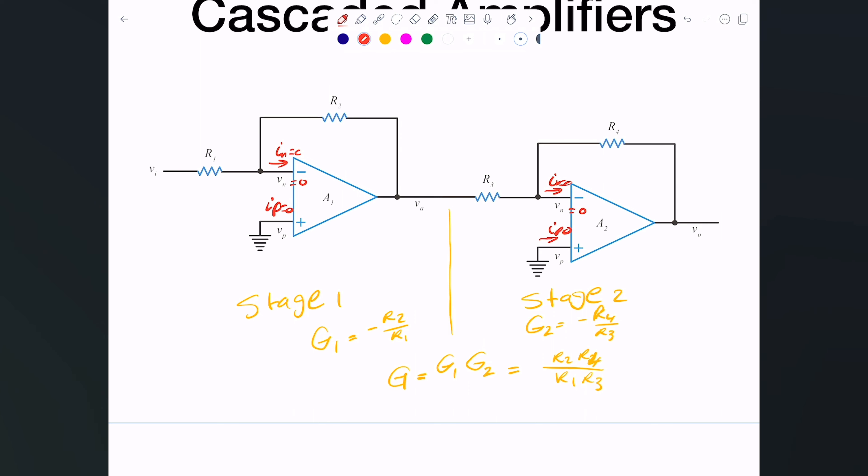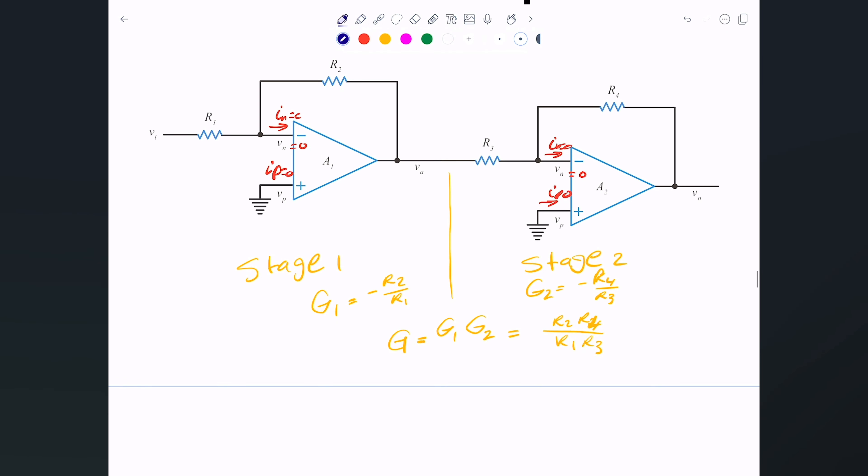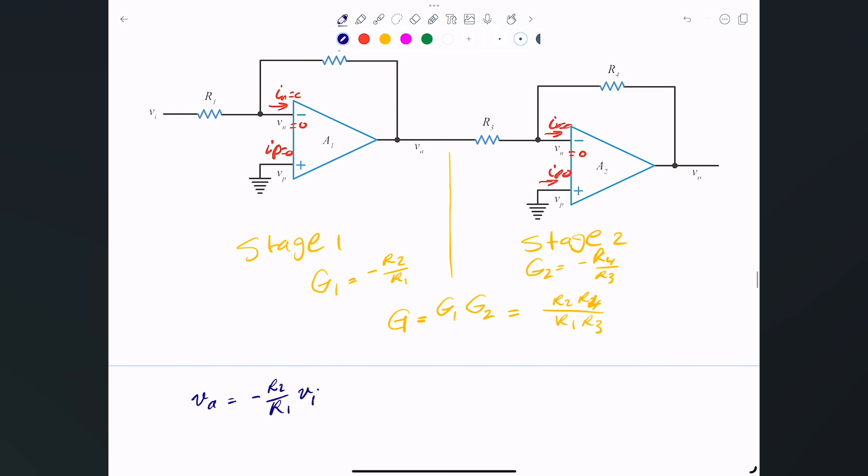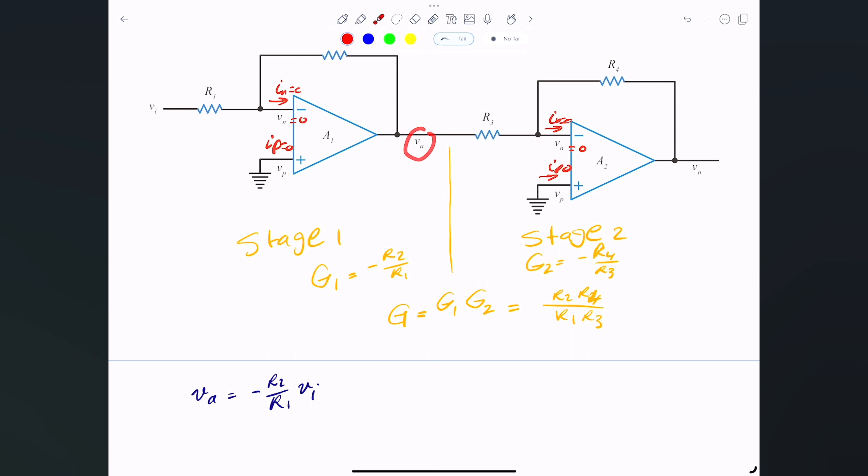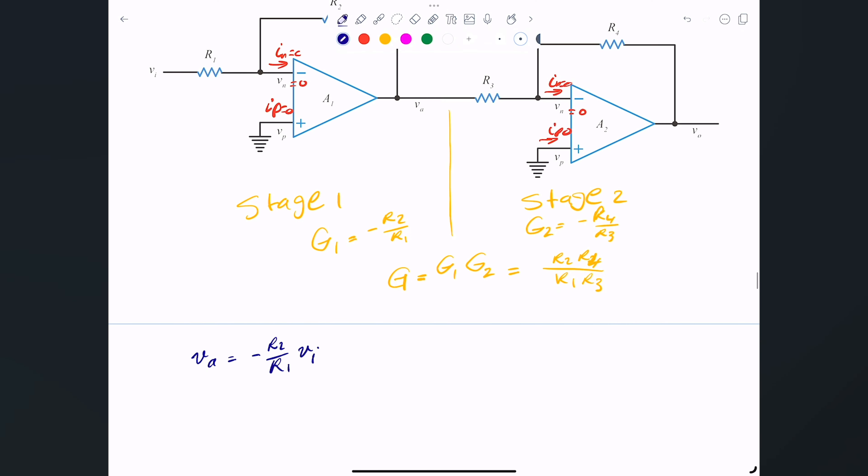And of course if I know this one here, this Vp is equal to Vn and this one here is also zero volts. So we know that Va is simply, you can write nodal analysis in here, or you can recognize that they're in series and the difference between them is Vi minus V out. Or we can just say, well we know that this is an inverting configuration, so it's simply negative R2 divided by R1 times Vi or V input.